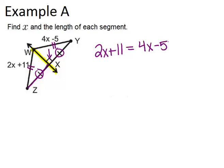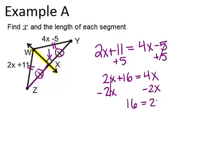And since we know that, we can solve for x. First, let's add 5 to both sides, and we end up with 2x plus 16 equals 4x. And then minus 2x from both sides, and we get 16 equals 2x.